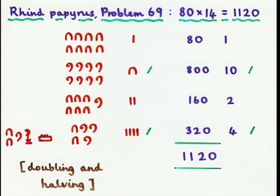Multiplication is more interesting. It's done mainly by using successive doubling and halving. Multiplication by 10 is also simple, because you just replace each symbol by the next one. So, here is a calculation of 80 times 14, taken from the Rhind Papyrus, problem 67. You write 80, which is 8 of these, and then you replace each heel bone by a coiled rope to give you 800. You then return to your 80 and double it to get 160. Then you double it again to give 320.